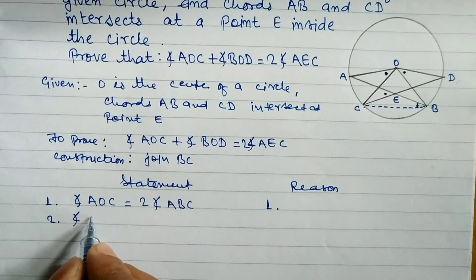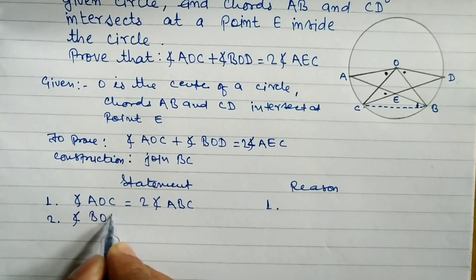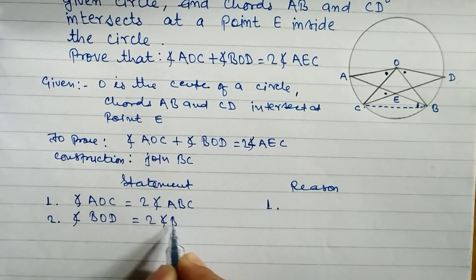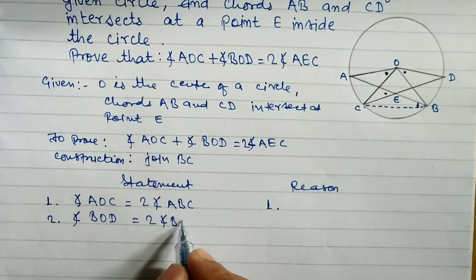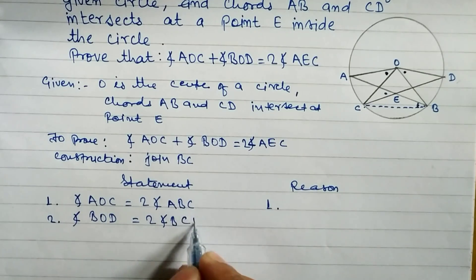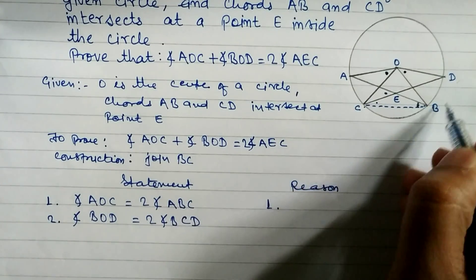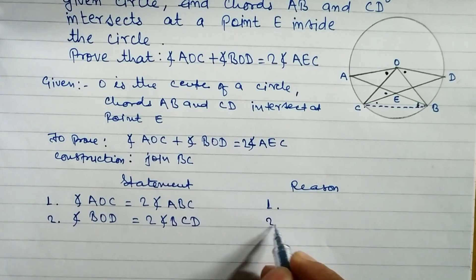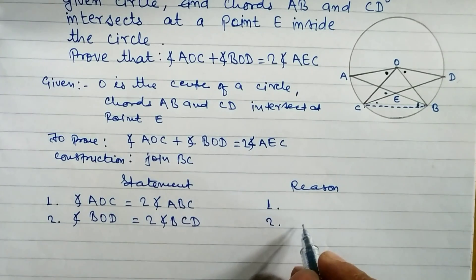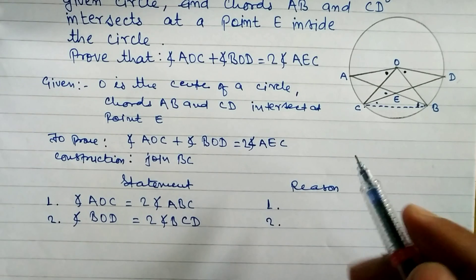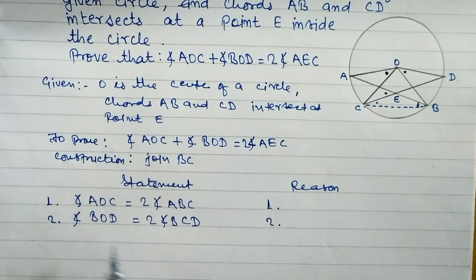So we can write: angle BOD equals two times angle BCD. The reason is the same — the central angle is double the inscribed angle.